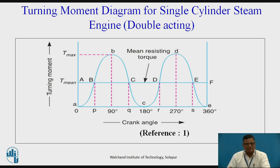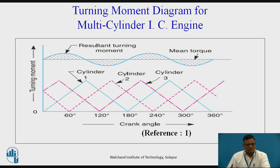The turning moment diagram for a single cylinder double-acting steam engine shows one cycle from 0 to 180 degrees, with the curve repeating from 180 to 360 degrees. For a multi-cylinder IC engine (as used in four-wheelers, trucks, and buses), each cylinder contributes its own turning moment diagram, and the resultant turning moment diagram is shown with the mean torque line corresponding to the constant load.